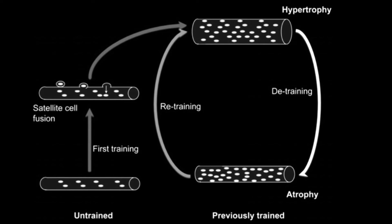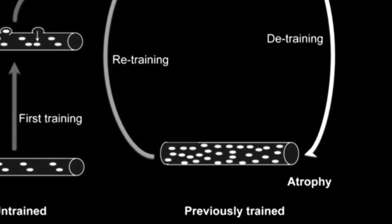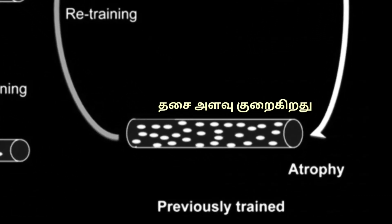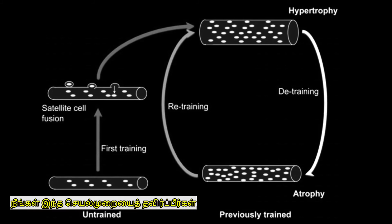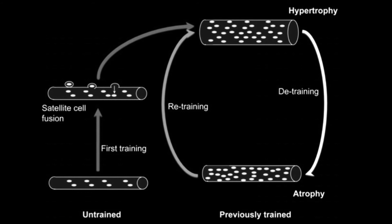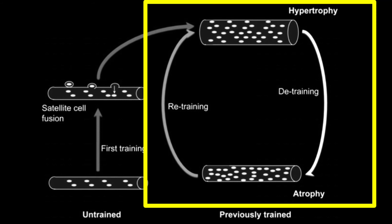If you stop training, your muscle size will decrease. But if you return to training, your elevated myonuclei number — built from your previous training history — allows you to regain muscle size more quickly. This is the basis of muscle memory, and the Oslo study was conducted on humans, not just rats or other animals.